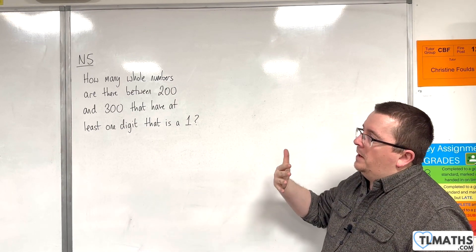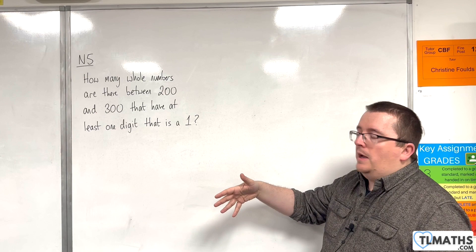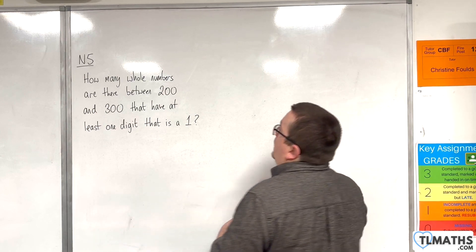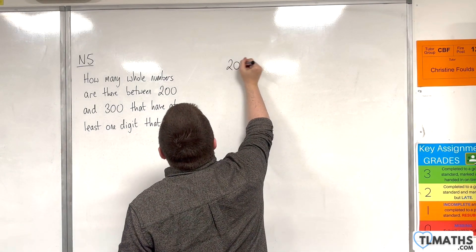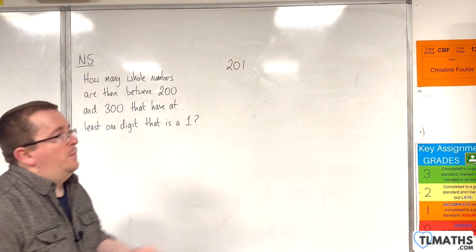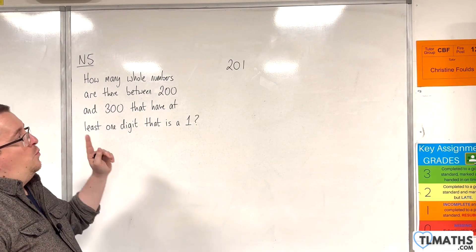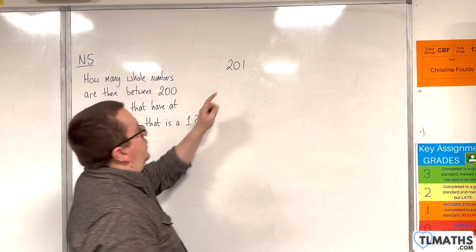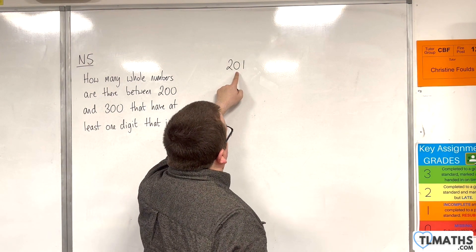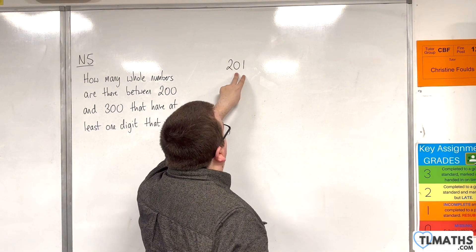The first number between 200 and 300 that has a 1 in it would be 201. Now, it doesn't matter where the 1 appears. It could be in the tens column, or it could be in both the tens and the units column.